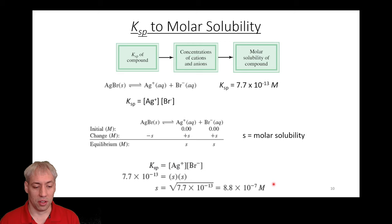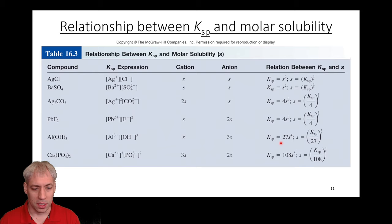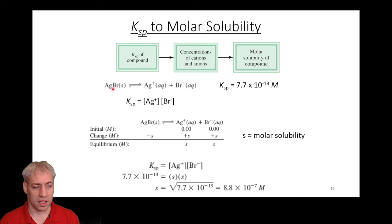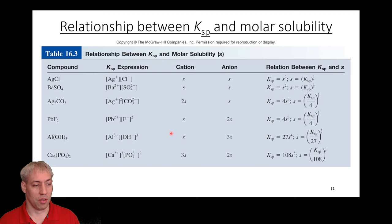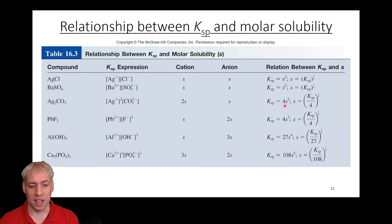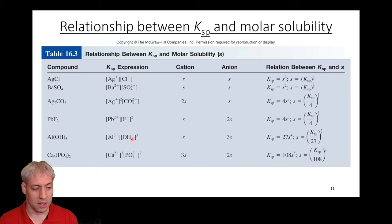It turns out we don't have to go through the full ice table math because there's no denominator — the solid is ignored in the Ksp equation. Whether it's 2s squared, 4s cubed, or 27s to the fourth, the math simplifies to a straightforward equation with no quadratics and no need to neglect x. For 1:1 stoichiometry, Ksp equals S squared. If stoichiometry is 1:2, you get 2s and s, so Ksp equals 4s cubed. For 1:3, you get S and 3S, giving 27 times s to the fourth equal to Ksp.